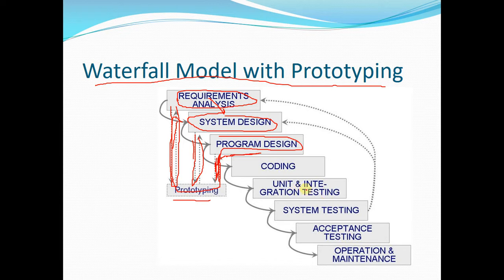Another change in the waterfall model with prototyping is that the system testing team is involved in the first two phases. The system testing team is responsible for testing the whole system and provides test cases that will be performed on the final product. By analyzing those test cases, we can further refine our requirements and system design. Therefore, the waterfall model with prototyping is relatively a better model compared to the simple waterfall model.